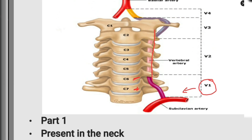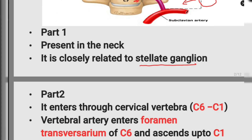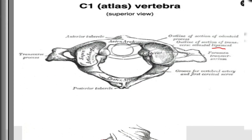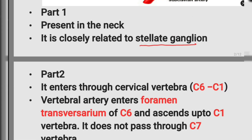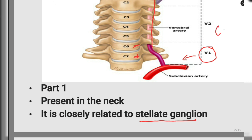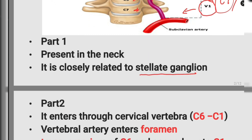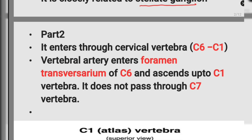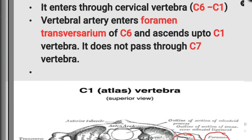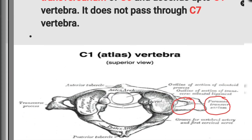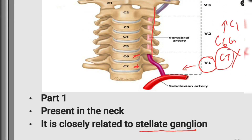The component of the cervical vertebra through which it enters is the foramen transversarium, present on both sides. So it enters from the C6 cervical vertebra, leaving C7, and ascends up to C1. This is part two of the vertebral artery. If there is any fracture to the cervical vertebra, it may cause laceration of the vertebral artery and can cause death.